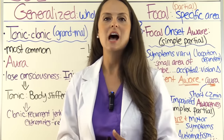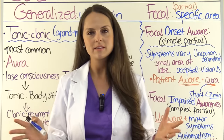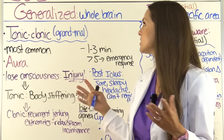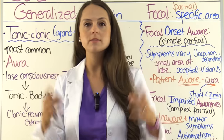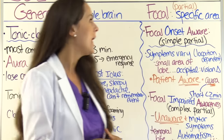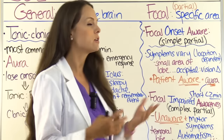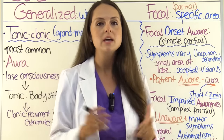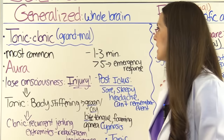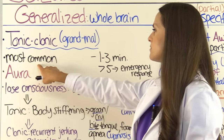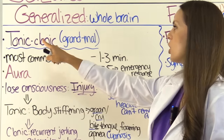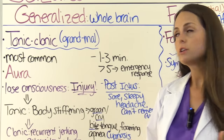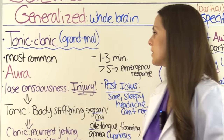Now let's talk about the different types of seizures. There are two categories: generalized seizures, affecting the whole brain, and focal seizures, also called partial seizures, affecting a specific side of the brain. The most common type of generalized seizure is the tonic-clonic seizure, formerly called grand mal seizure. This is what most people think of when they picture someone having a seizure.